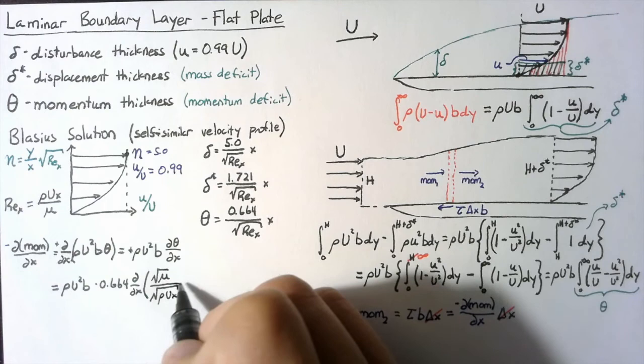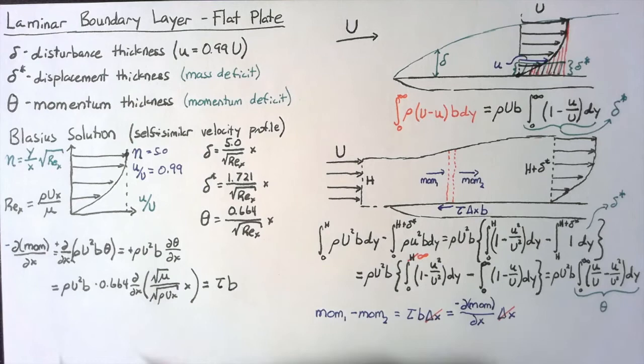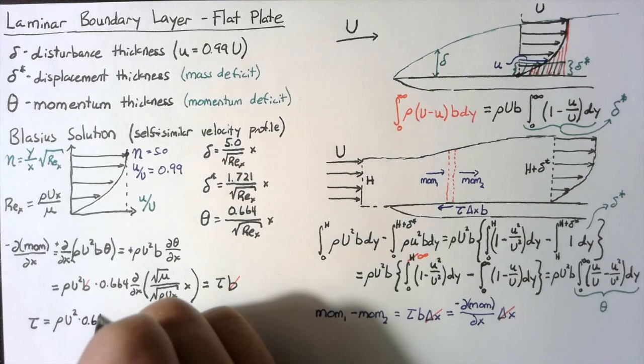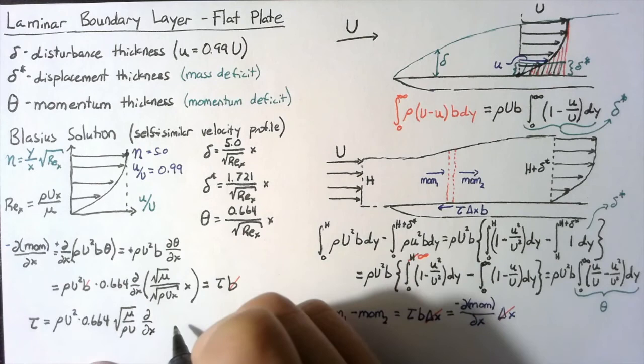Once again, we said that this was equal to tau times b. So if we cancel out these b terms, then we can write that tau is equal to rho U² multiplied by 0.664. We can bring out the constants to get the square root of mu over rho U, and we just have d/dx of the square root of x.